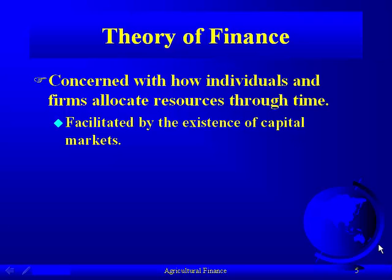Let's talk about the second point: this allocation is facilitated by the existence of capital markets. Capital markets include the stock market, the bond market, and commercial banks where you can save money and they lend it to other people. Let's assume those capital markets didn't exist.